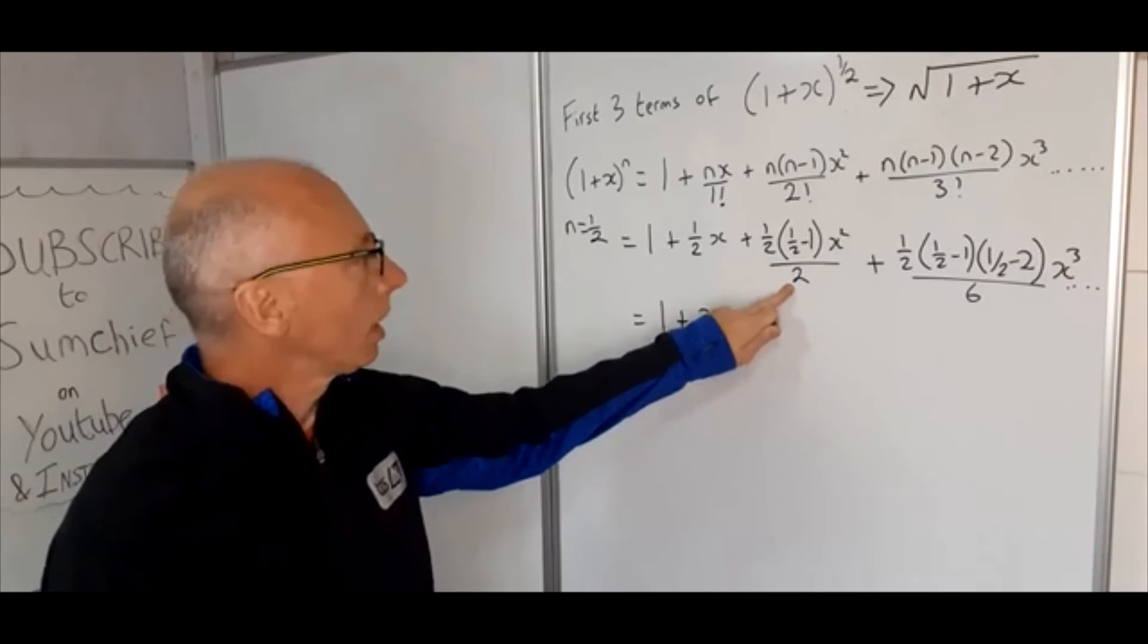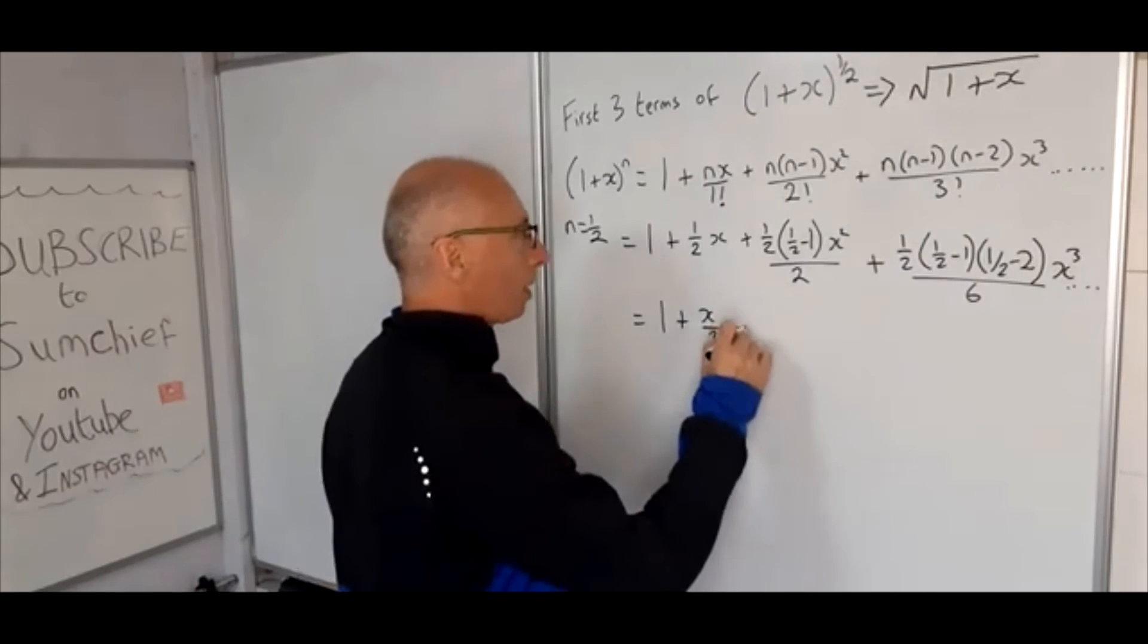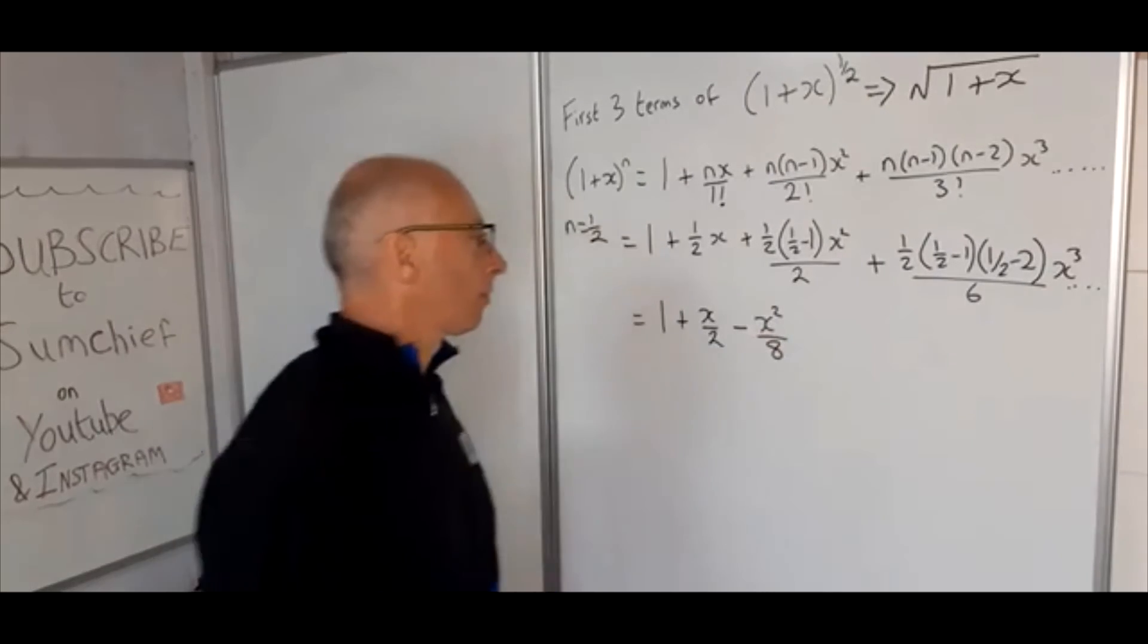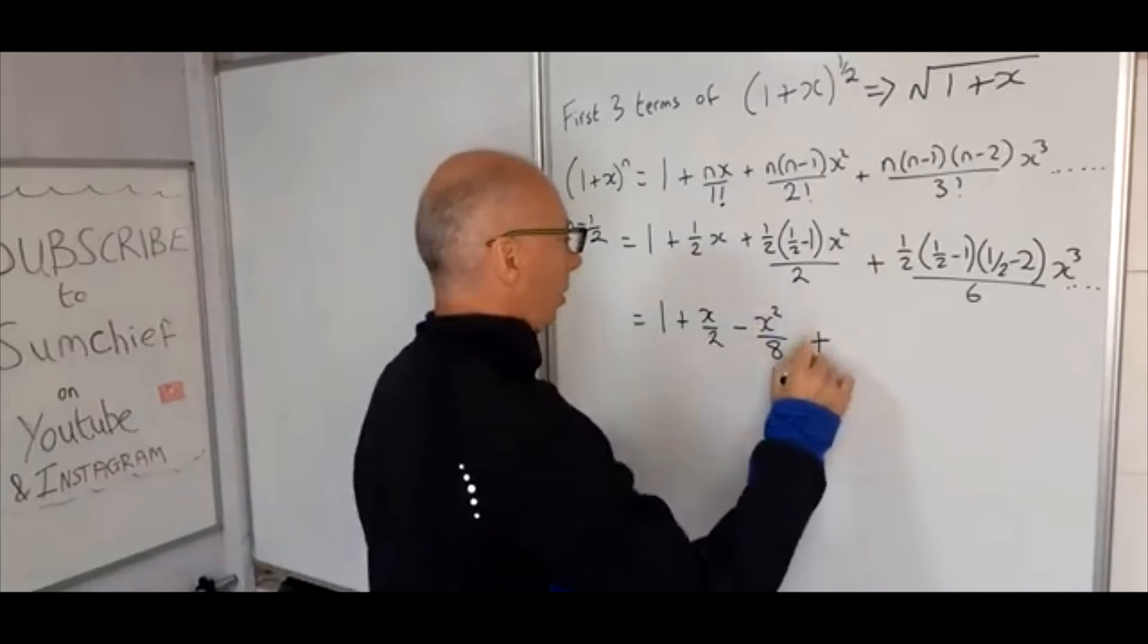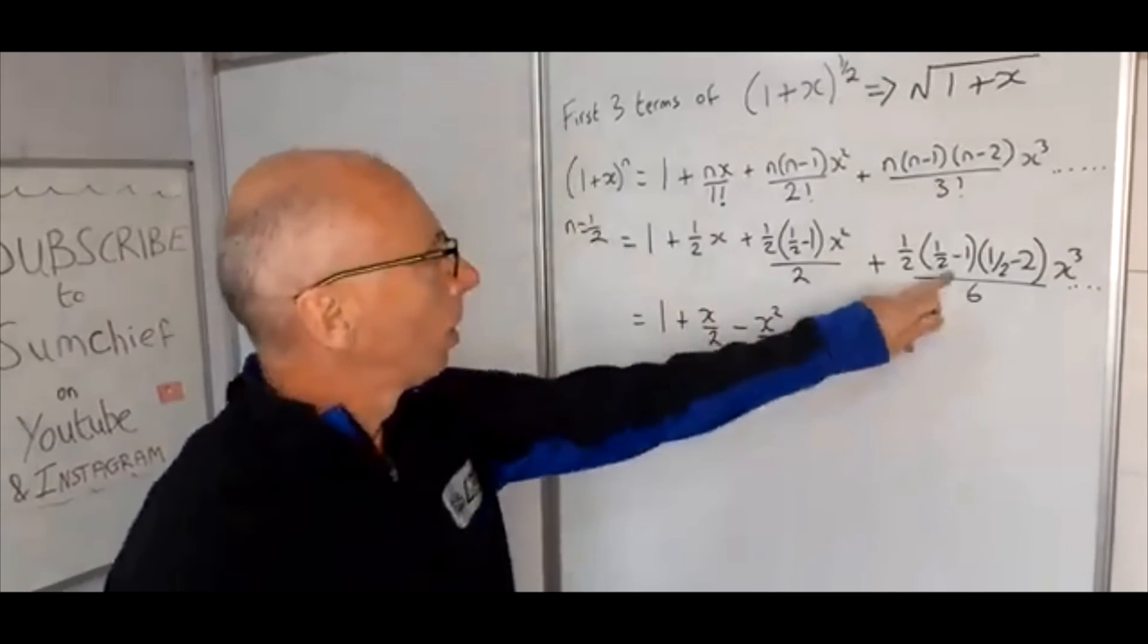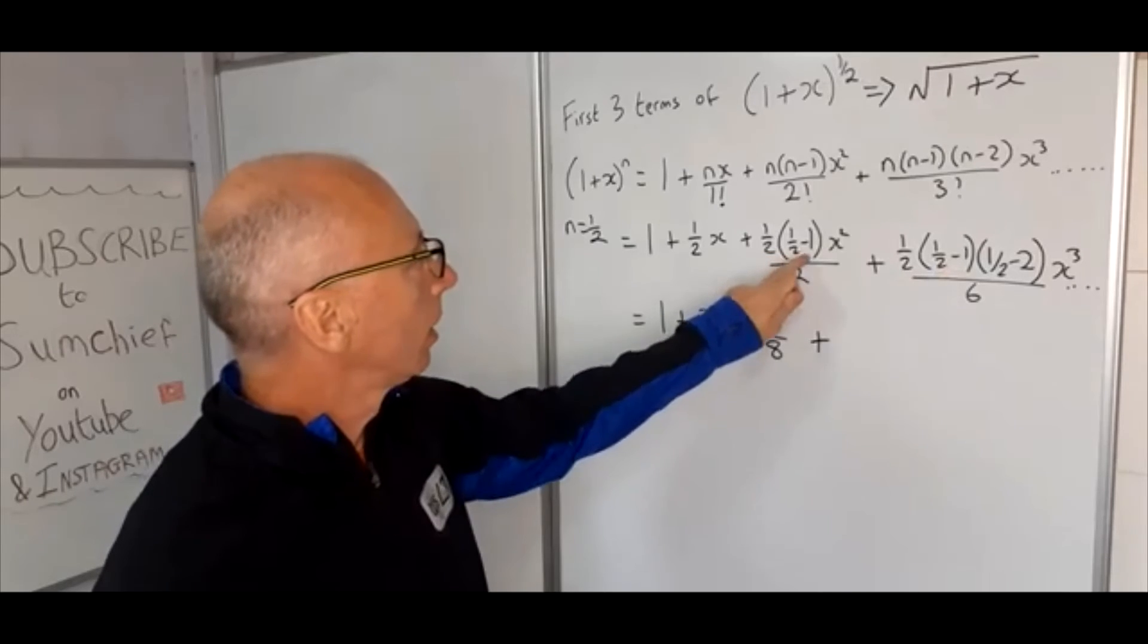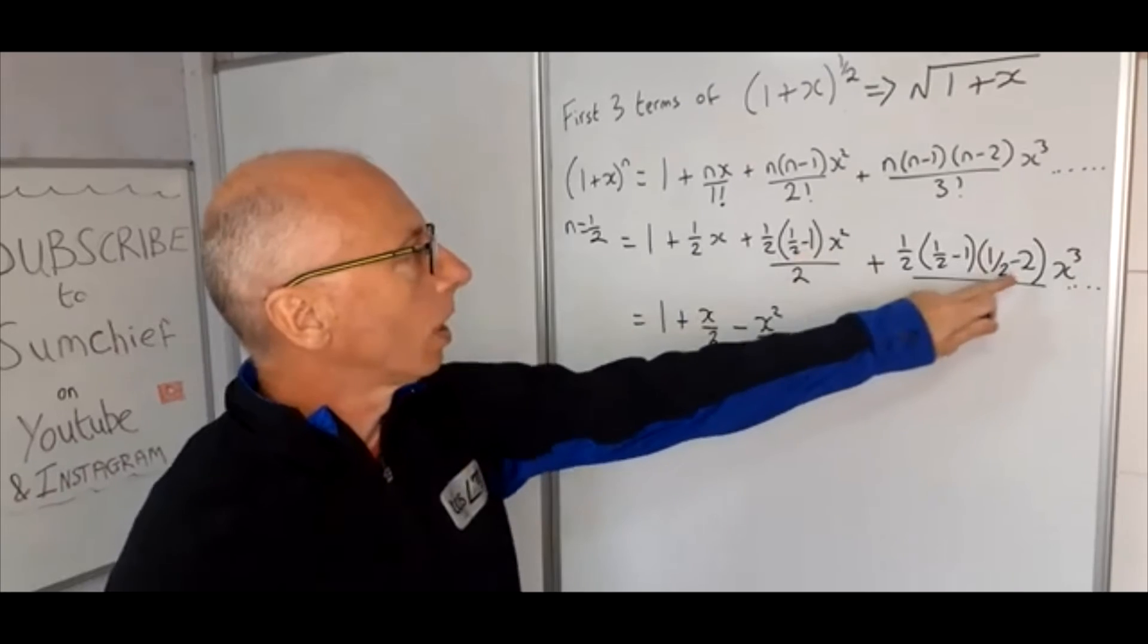So we can put minus x² over 8. Okay, next term: so plus (1/2) times (a half minus 1), we've already done that here, that's going to be minus 1 quarter.